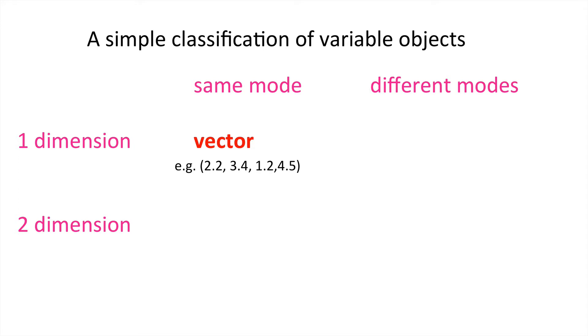The simplest form of variable is called a vector, and with vectors we've got a single linear dimension of elements, but all of these elements have the same mode, such as here, where they all are represented by numbers.